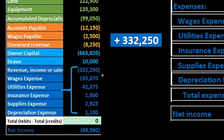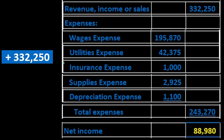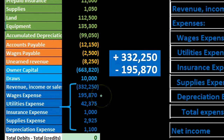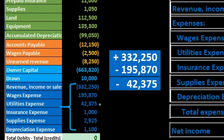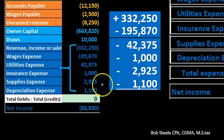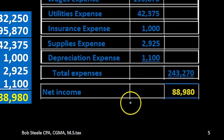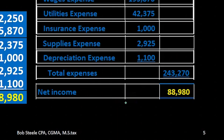To double-check in Excel, we can highlight the revenue and expense accounts from the trial balance. Excel treats the credit (revenue) as negative, so highlighting all of them will subtract the debits and give us net income of $88,980. We can verify this with a calculator: $332,250 minus $195,870 minus $42,375 minus $1,000 minus $2,925 minus $1,100 equals $88,980. Having this in Excel makes these double checks easy.